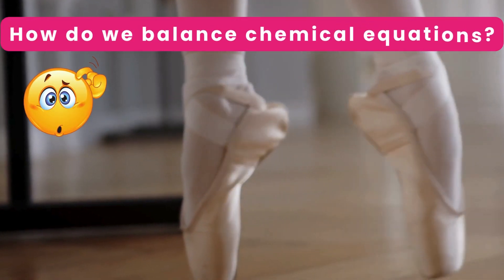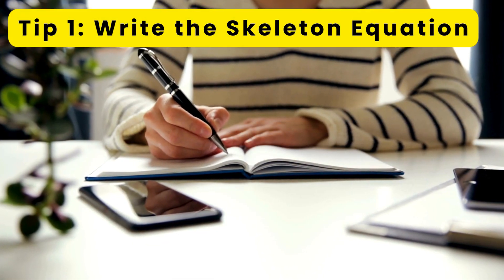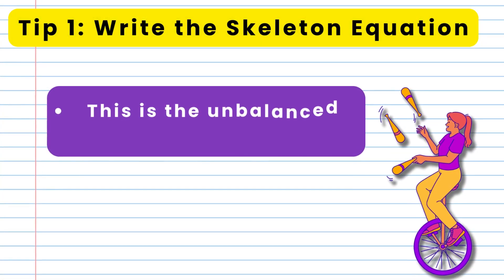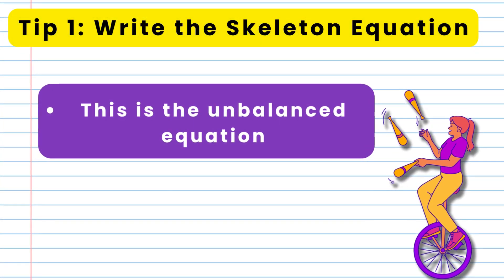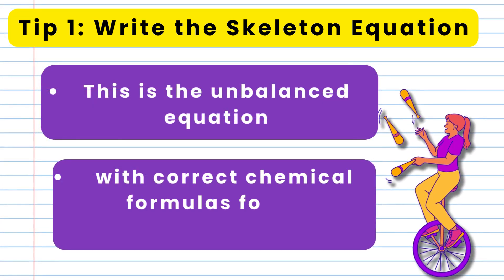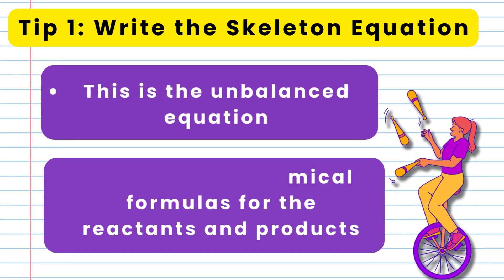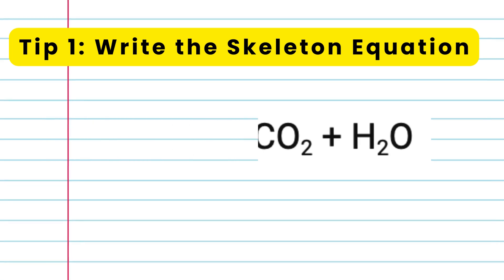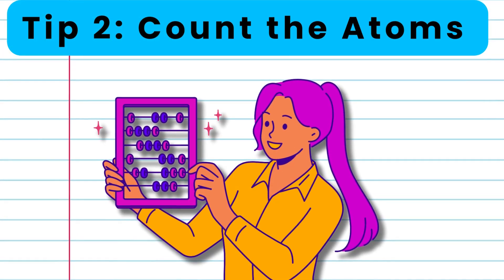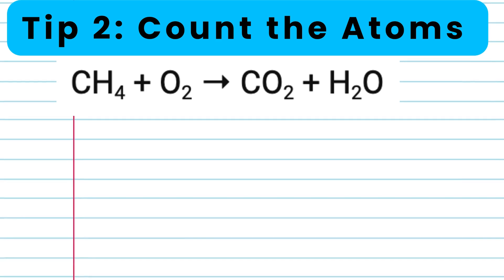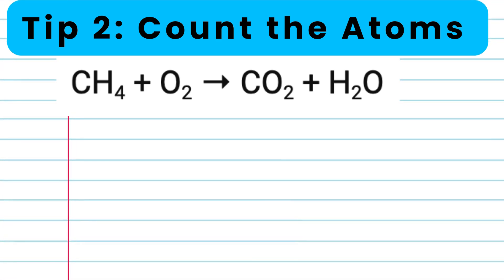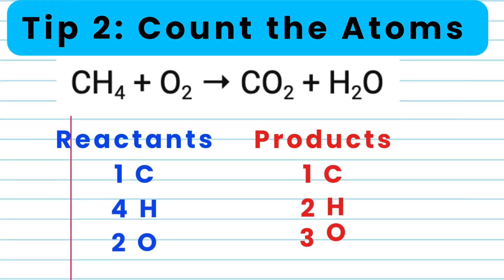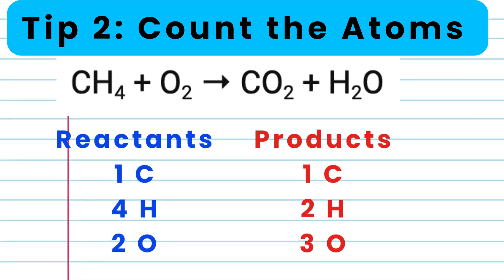How do we balance chemical equations? Tip 1: Write the skeleton equation. The skeleton equation is the unbalanced equation for the chemical reaction with the correct chemical formulas for the reactants and products. So we write CH4 plus O2 gives CO2 plus H2O. Tip 2: Count the atoms of each element on both the reactant and product sides of the equation. There is 1 carbon on both sides, 4 hydrogen and 2 hydrogen, 2 oxygen and 3 oxygen.